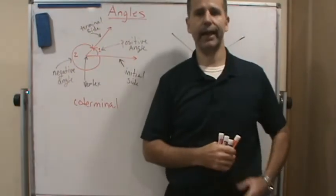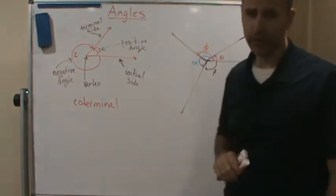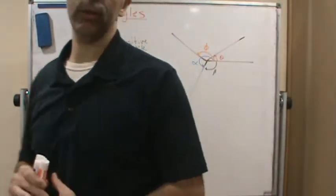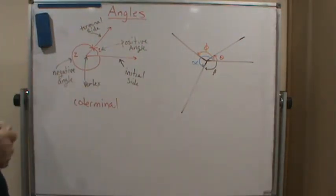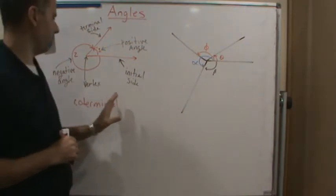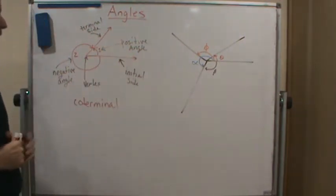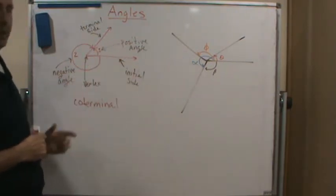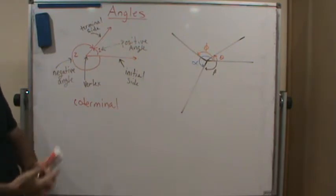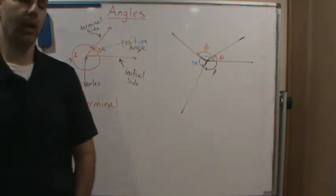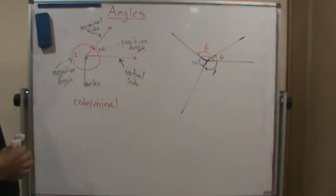Welcome back. In this video we're going to start talking about angles — different types of angles, how to draw angles, and the different terminology and concepts that come along with that. We can label an angle using numbers, Greek letters, or regular symbols.